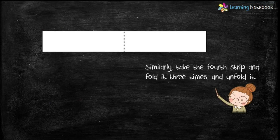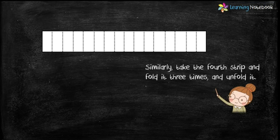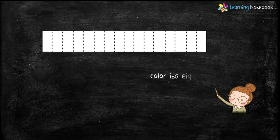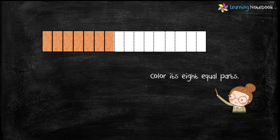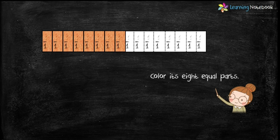In the same way, let's take the fourth strip and fold it 3 times. Unfold it and you will find that the strip has been divided into 16 equal parts. Now let's color its 8 equal parts and then write the fraction of each part, which is 1 by 16.